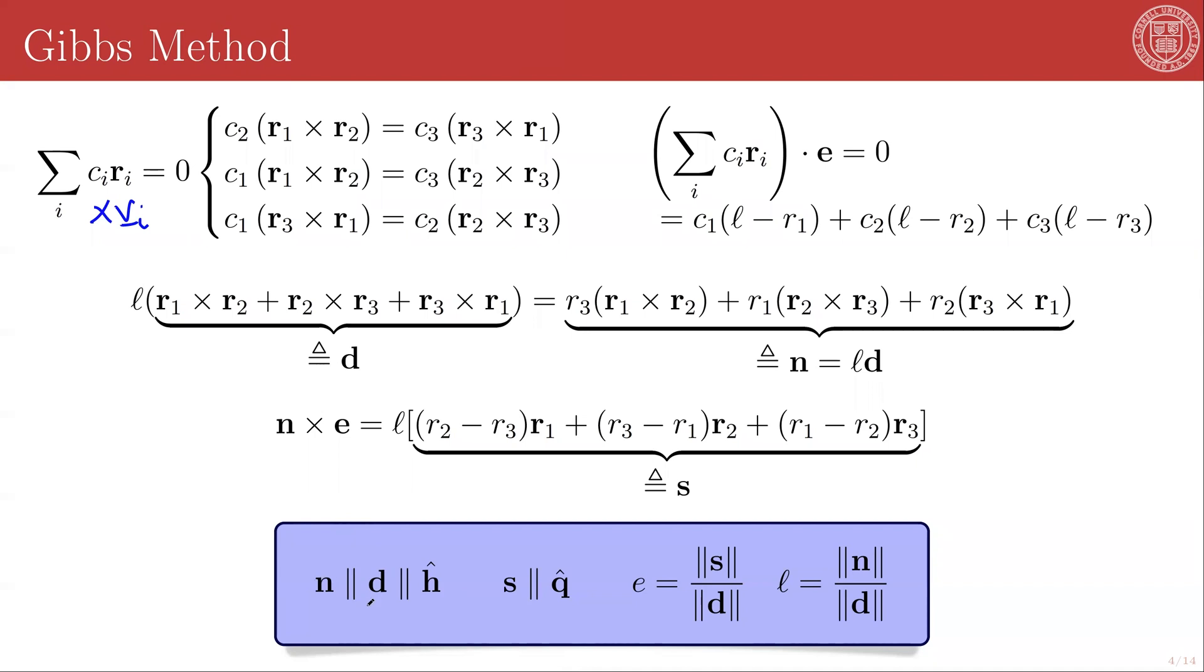Because n and d are both parallel to h hat, n crossed with e must be in the q hat direction, which means that s must be parallel to q hat. And this now provides us with all of the information that we need to solve for all of the geometric orbital parameters.